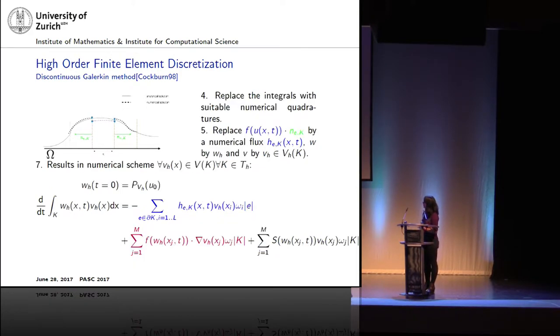Further on, to actually solve this numerically, you have to then replace your integrals with quadrature forms, and disambiguate the value-add interfaces, use Riemann solvers, or approximate Riemann solvers. And, in the end, we have this numerical scheme, and this is what we use.